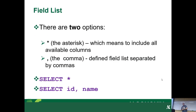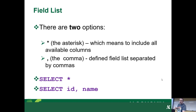There are two options with the field list: the asterisk and a comma-delimited list. The asterisk — the star — means include all available columns, so it'll grab everything from the table. The comma-delimited list allows you to specify very specific columns to pull back. I'll explain why preferably you're going to use a comma-delimited list as opposed to using the asterisk.